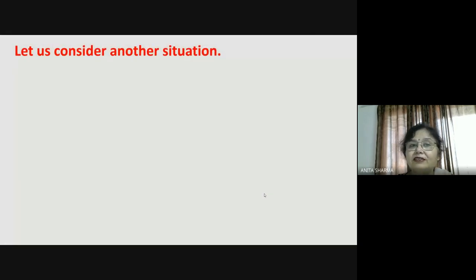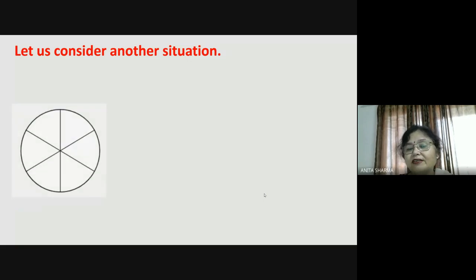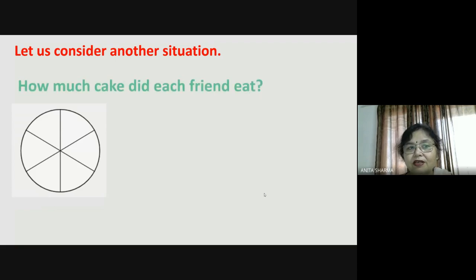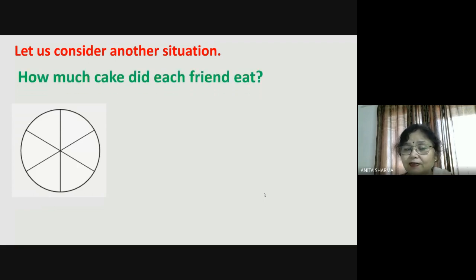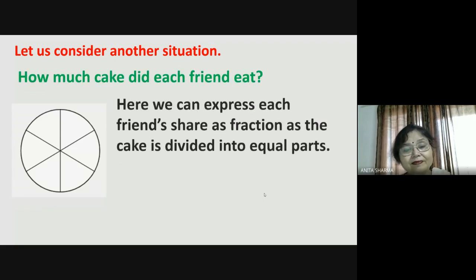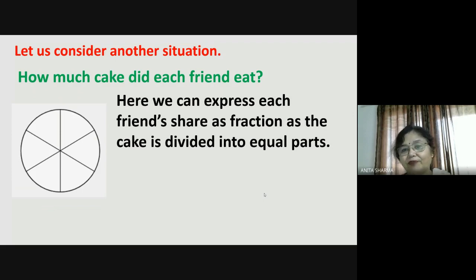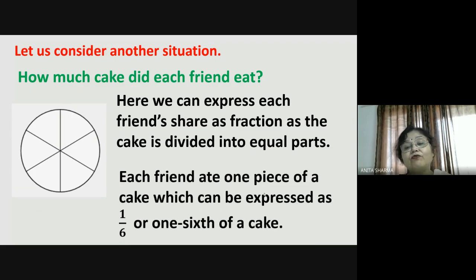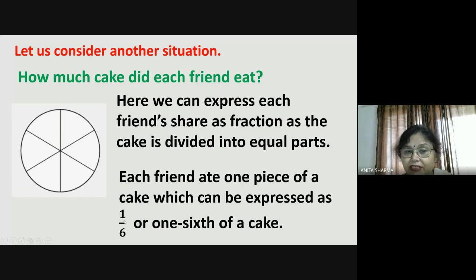Let us consider another situation. Just see — here is the top of the cake and you can see that all the parts are equal. How much cake did each friend eat? Can we say? Here we can express each friend's share as a fraction, as the cake is divided into equal parts. Each friend ate one piece of the cake, which can be expressed as one-sixth of the cake.